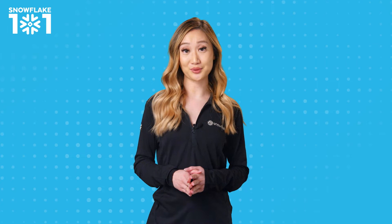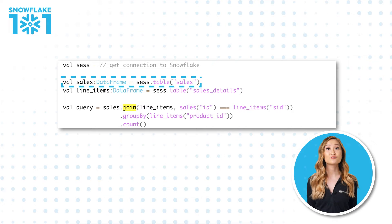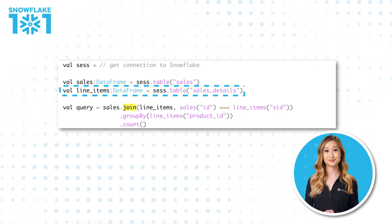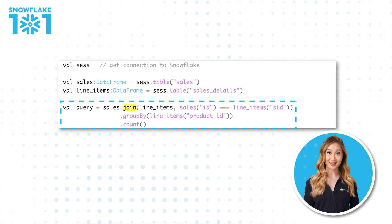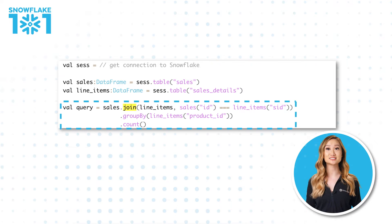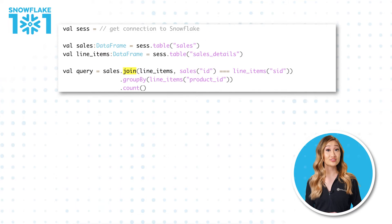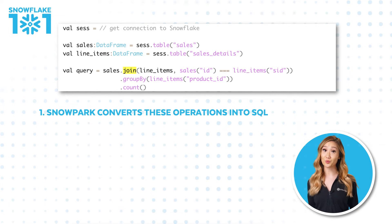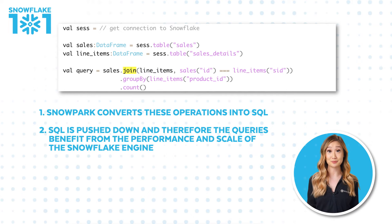Let's look at an example. Here, we are creating two data frames — one from the sales table and one from the sales detail table. We can then use the data frame methods to join, group by, and count to execute in Snowflake, without writing any SQL. Pretty cool! When this code is executed, Snowpark converts these operations into SQL. SQL is pushed down, and therefore, the queries benefit from the performance and scale of the Snowflake engine.